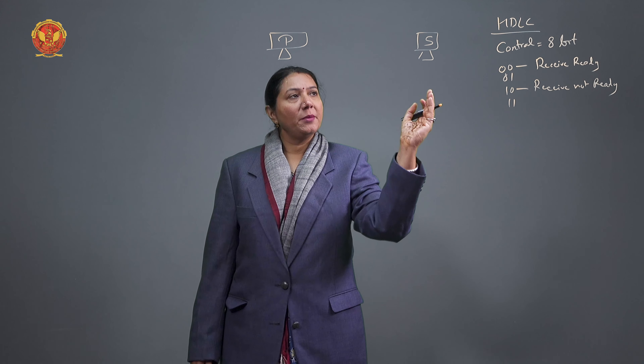HDLC uses a supervisory frame for communication between primary and secondary stations. HDLC has a full frame format where the control information is 8 bits. The first two bits identify whether the frame is an I-Frame, S-Frame, or U-Frame. The supervisory frame has 4 functions specified by bits: 00, 01, 10, 11 — each indicating a different function.